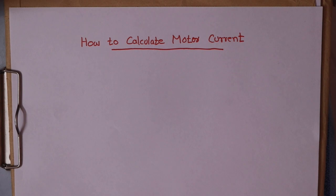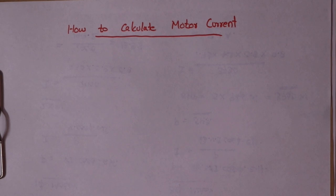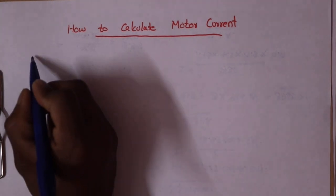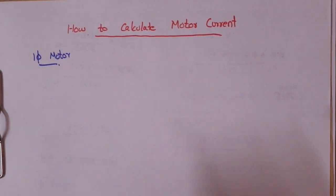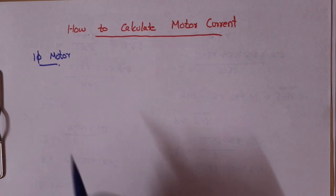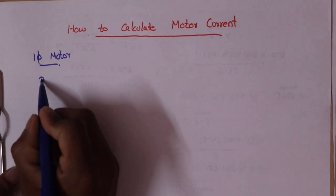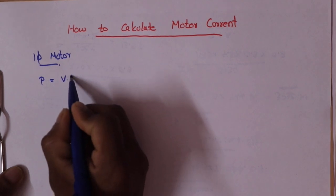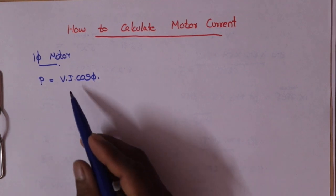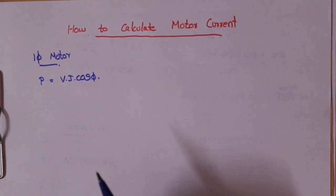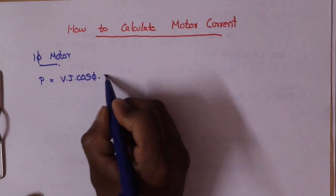We are looking at how to find the current for a single-phase motor. The power formula is: power is equal to V times I times cosφ. We need to select V, I, and the power factor. In the practical case, we also have an efficiency factor.